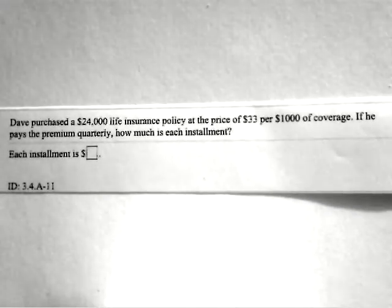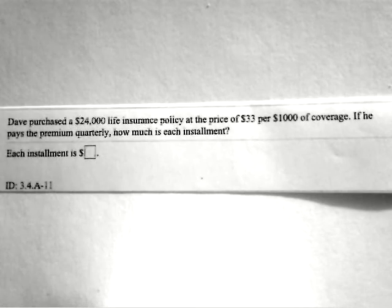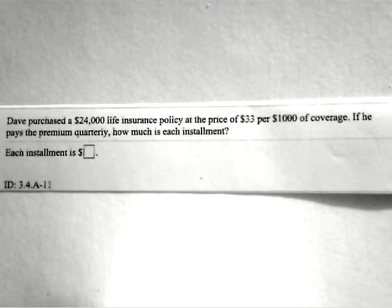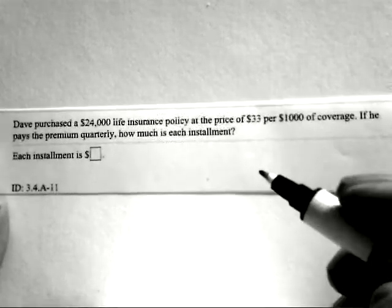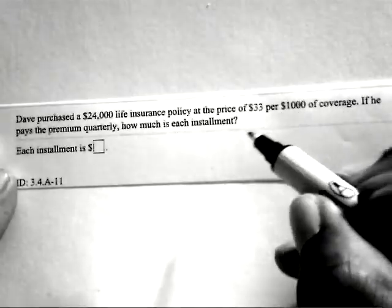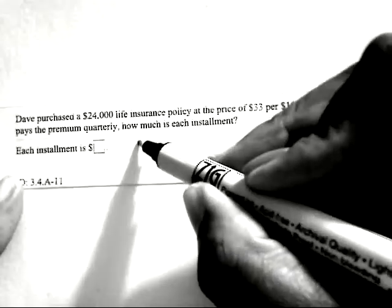Problem number 5. David purchased a $24,000 life insurance policy at the price of $33 per $1,000 of coverage. If he pays the premium quarterly, how much is each installment? So we got $24,000 of life insurance coverage.